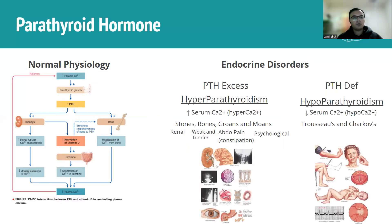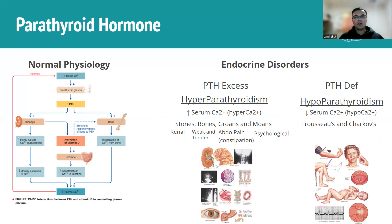Next is parathyroid hormone, which plays a key role in regulating serum calcium and bone health. Excess parathyroid hormone — hyperparathyroidism — leads to hypercalcemia. A great mnemonic for hypercalcemia is stones, bones, groans, and moans. Stones refers to renal stones — nephrolithiasis — where calcium deposits form in the kidneys, causing colicky flank pain.